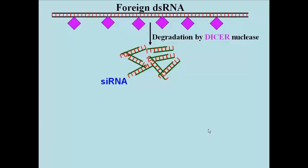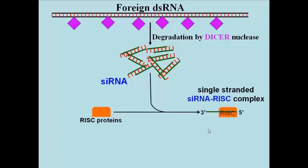The siRNAs become single-stranded as they combine with RISC proteins that are normally made by the cell. This forms a RISC, or RNA-induced silencing complex. So RISC is a ribonucleoprotein complex. Remember that ribosomes themselves are ribonucleoprotein complexes, so the combination of RNAs and proteins into a useful structure in the cell is hardly unknown.